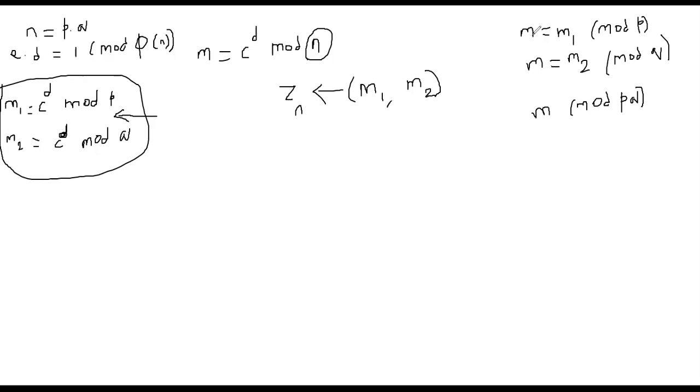That's basically the beauty of Chinese Remainder Theorem. You don't know m, but you know when m is divided by p, the remainder is m1. m is divided by q, the remainder is m2. The Chinese Remainder Theorem will find the m in mod pq. But here m2 is wrong because there is a hardware fault injected. So now let us think about how an attacker can make use of this and extract the prime factors p or q.